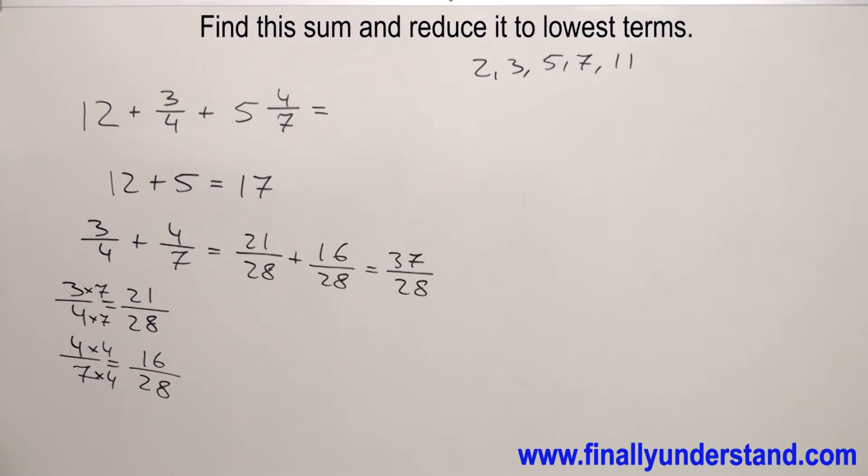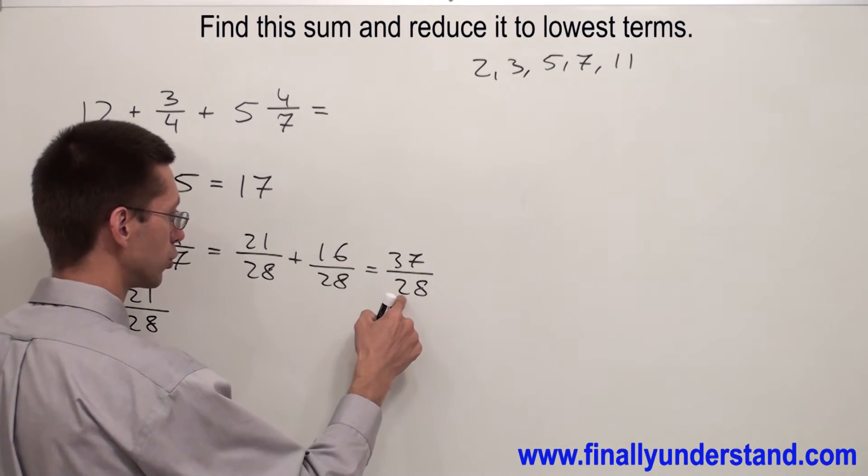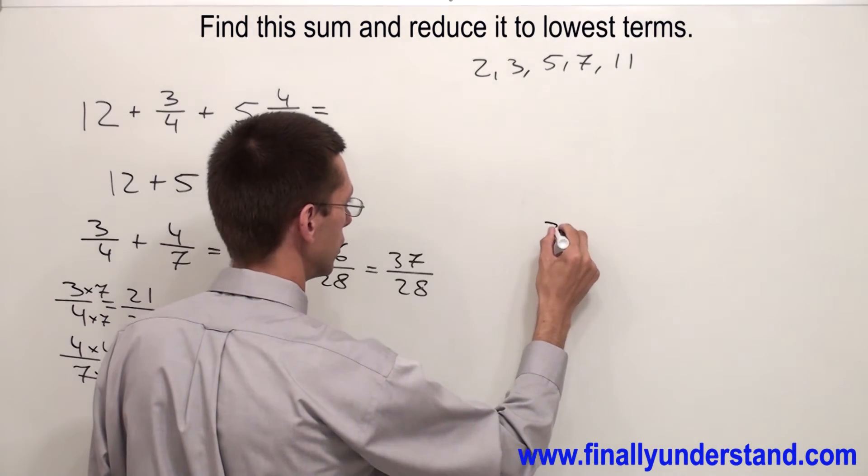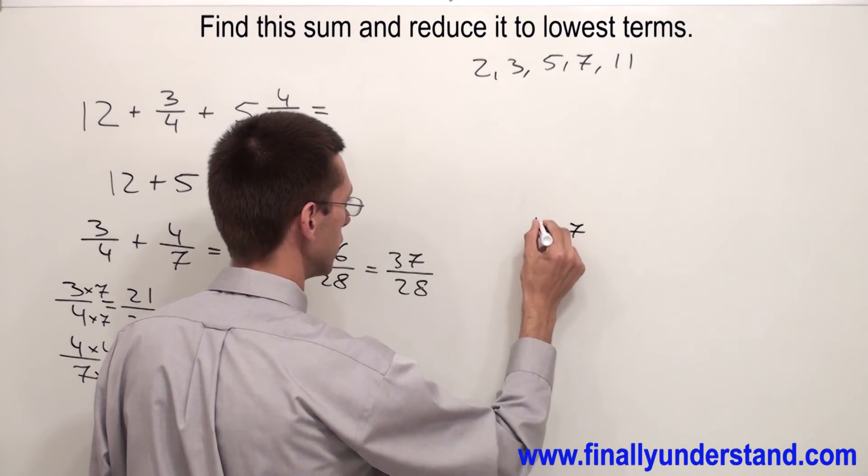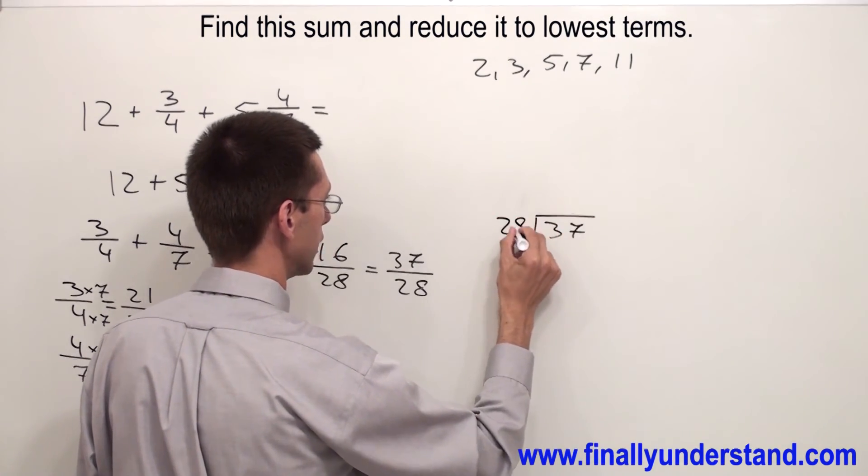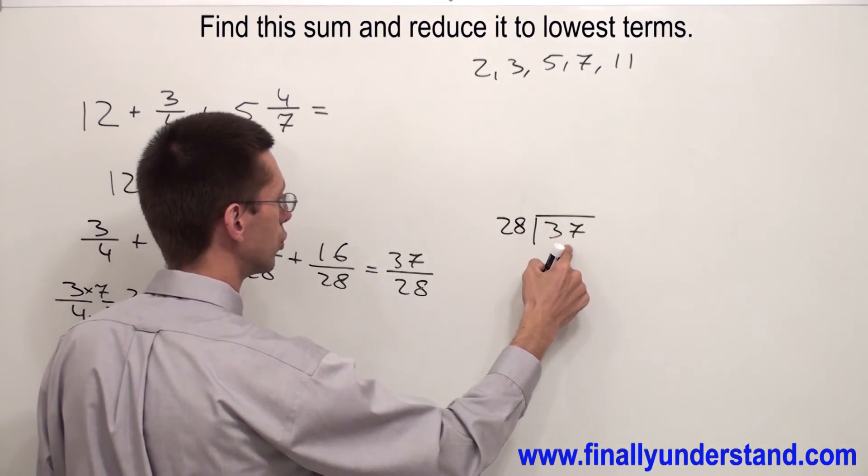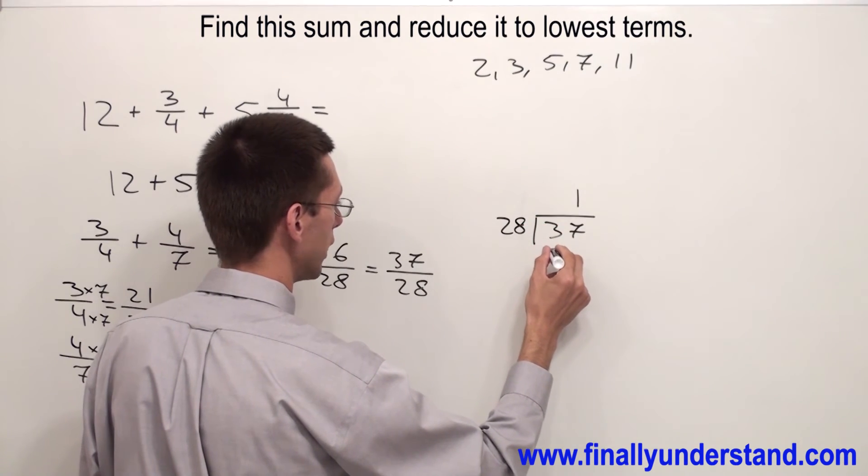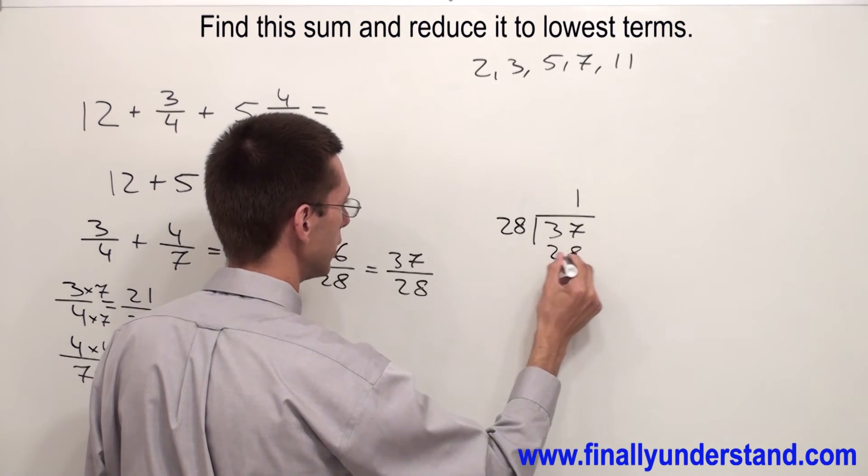Anytime you want to convert an improper fraction to a mixed number, you have to divide 28 into 37. So I have 37 over 28. How many times does 28 go into 37?